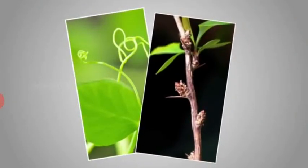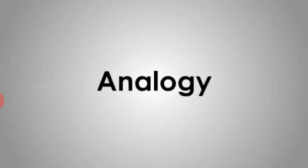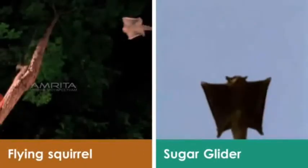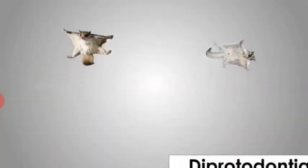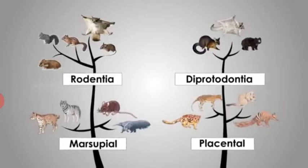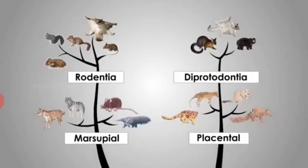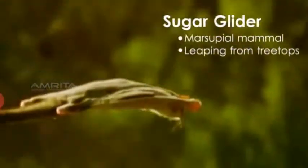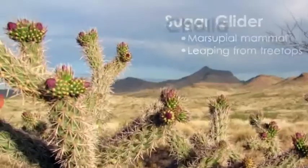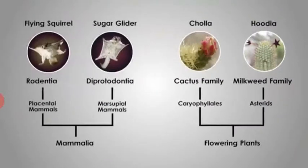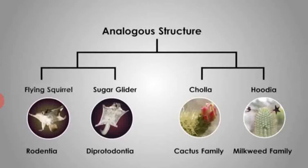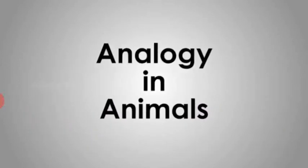Analogy is a similarity in function in different organisms due to evolution. That is, species may also have similar traits even though they are not related to each other. This usually results because the species live in similar environments, fill similar ecological roles, and through natural selection, the same type of structure is favored in different ancestors. The structures in this case are known as analogous structures.